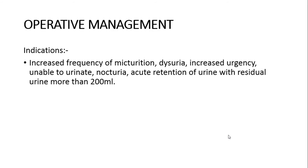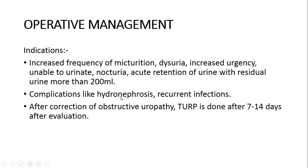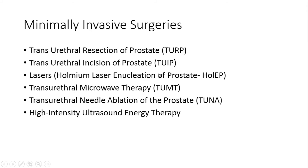Operative management — when to operate? It is done when there is increased frequency of micturition, dysuria, increased urgency, inability to urinate, nocturia, and acute retention of urine with residual urine more than 200 ml. It is also done when there are complications of BPH like hydronephrosis and recurrent urinary tract infections, or in obstructive uropathy after correction of those features. Minimally invasive surgeries for BPH include: transurethral resection of prostate (TURP), transurethral incision of prostate (TUIP), Holmium laser enucleation of prostate (HoLEP), transurethral microwave thermotherapy (TUMT), transurethral needle ablation of prostate (TUNA), and high-intensity focused ultrasound (HIFU).